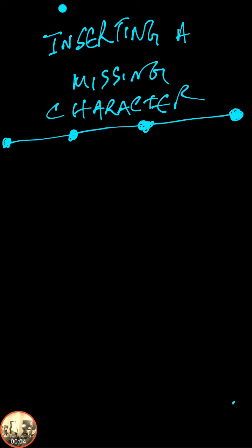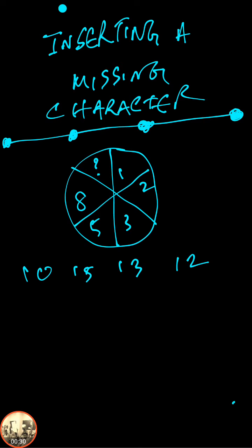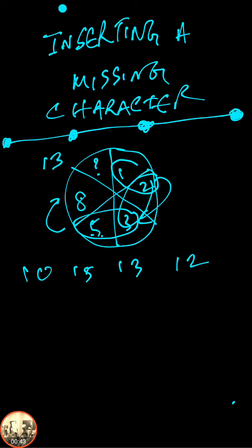Today's topic is based on a very important segment of logical reasoning called inserting a missing character. For example, they will give you a circle with parts containing numbers like 1, 2, 3, 5, 8, and you have to guess the missing number. With options like 10, 15, 13, and 12, you add consecutive pairs: 1+2=3, 3+5=8, and 8+5=13. There is no single specific rule, but this video covers many different ways to understand this concept.